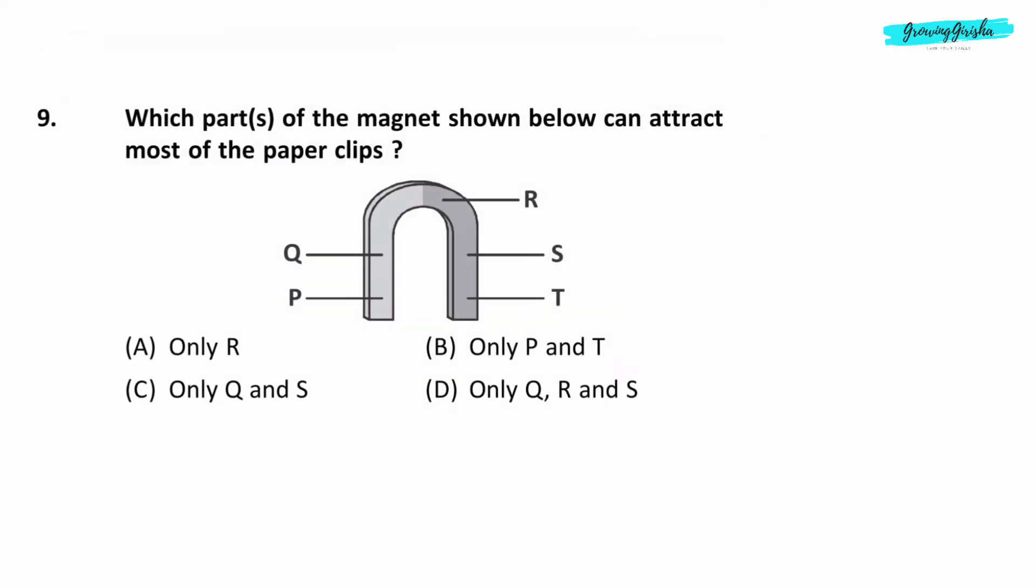Question 9. Which parts of the magnet shown below can attract most of the paper clips? Option B. Only P and T.